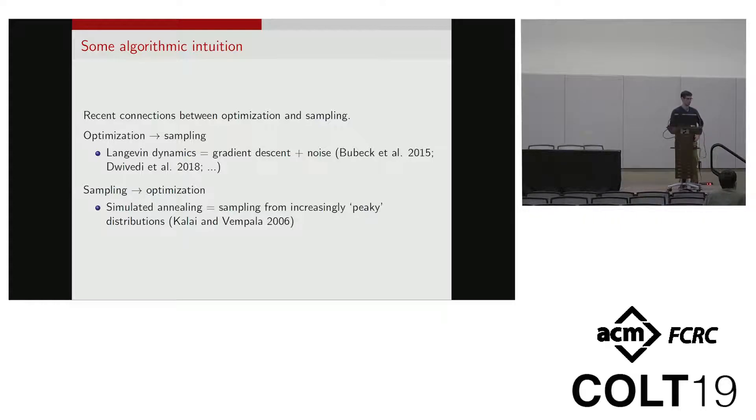There are some results out there that say you take a popular optimization algorithm and you add some noise to it, and this turns out to be a pretty good sampler in a lot of cases that we care about. It's also known that if you have a good sampler for some schedule of distributions, this turns out to be able to optimize certain classes of problems.